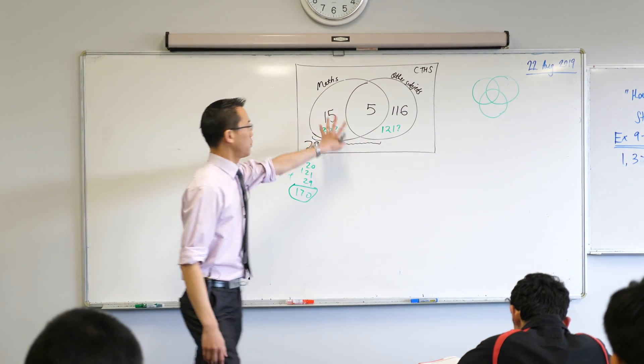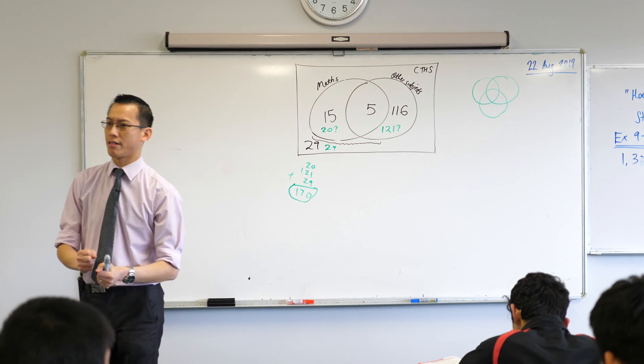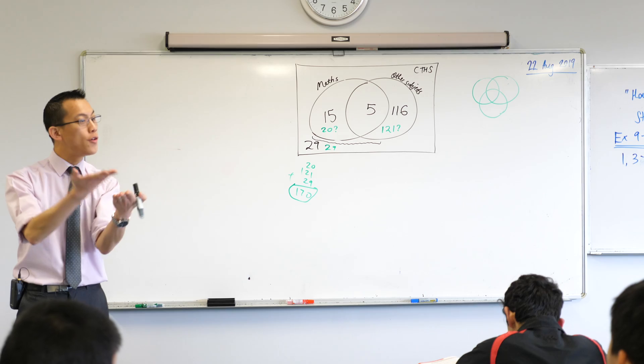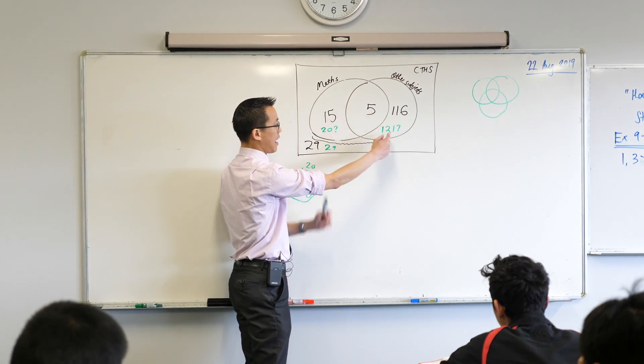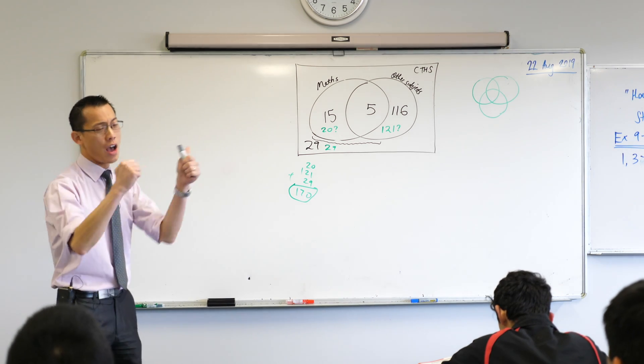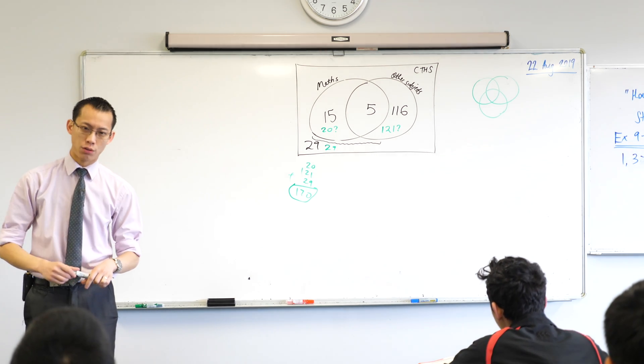I want us to remember why it is that we use tools like this, like Venn diagrams, right? We use Venn diagrams when we've got a situation and there are groups or categories that overlap in some way. So Venn diagrams are really good at representing that information, but they're not always the perfect tool.